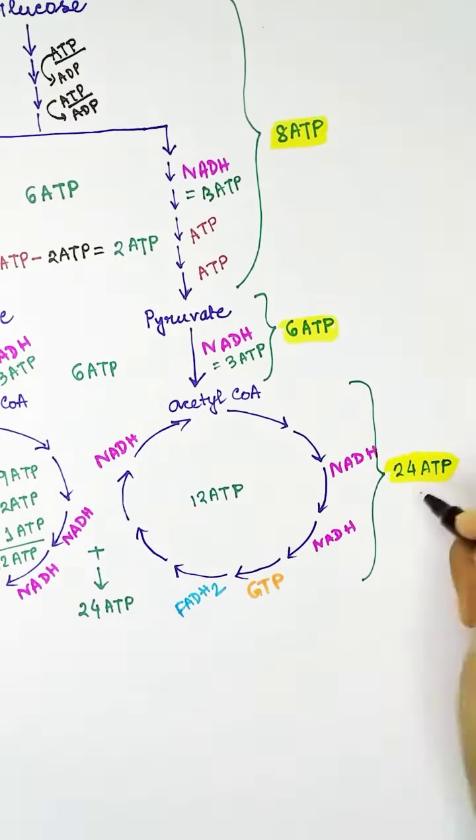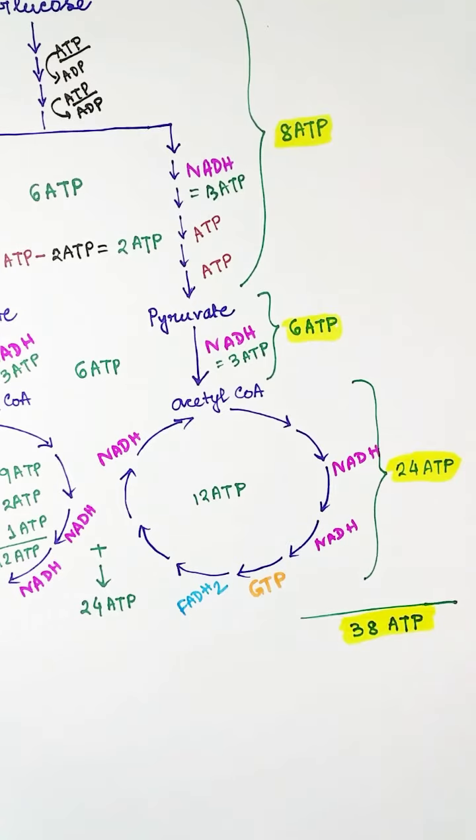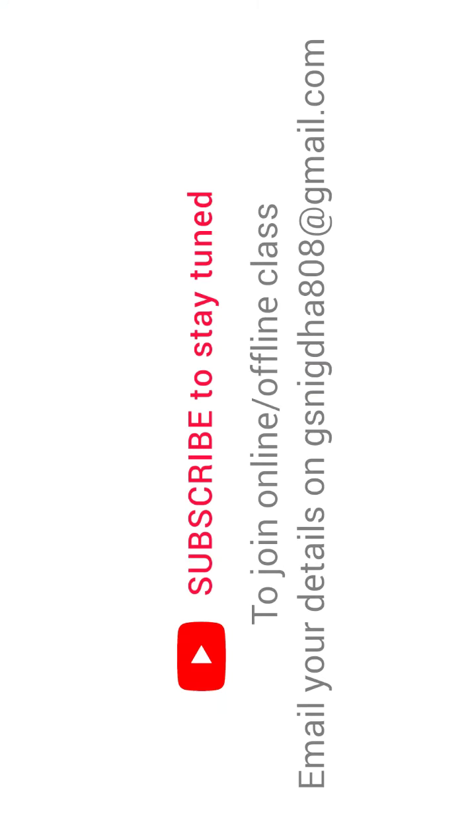So from one glucose breakdown we get total 38 ATPs.